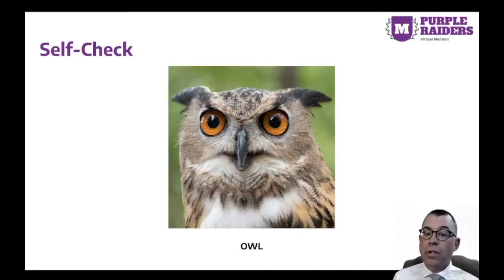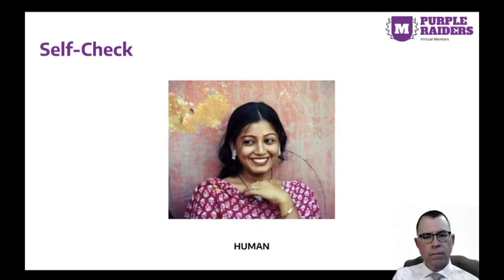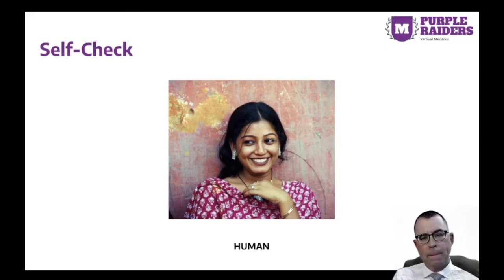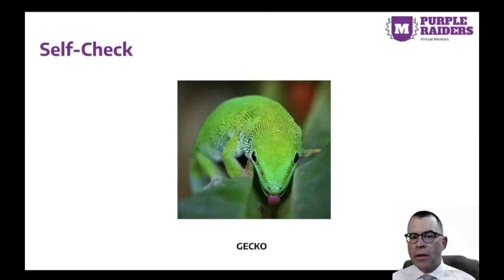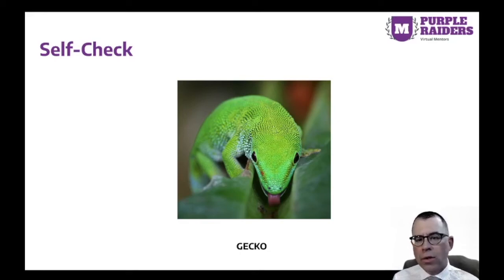Owls are mainly nocturnal, or active at night. They are large animals that use their powerful wings, sharp talons, and curved bills to hunt and eat other animals. How would you classify an owl? What about a human? How would you classify a human? Geckos are found on all the continents except Antarctica. These colorful animals have adapted to habitats from rainforests to deserts to cold mountain slopes. Geckos are mostly small, nocturnal animals with a soft skin. How would you classify a gecko?